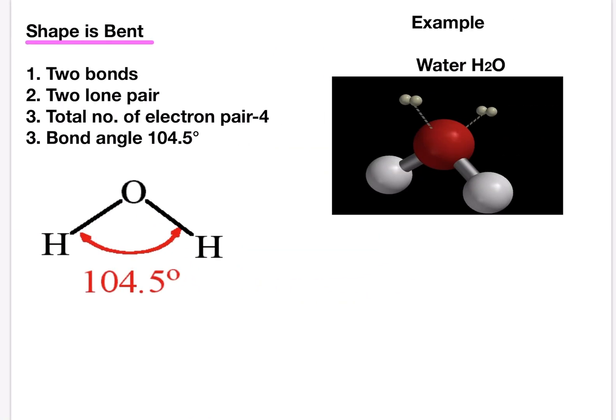Next is shape is bent. This is the molecule of water. If you look carefully you will see that the molecule of water has two lone pairs. There are two bonds and two lone pairs. So the total of electron pairs is four. Because of the two lone pairs the angle between the hydrogen to hydrogen is 104.5 degrees. That's the greatest repulsion that occurs between the lone pairs there.